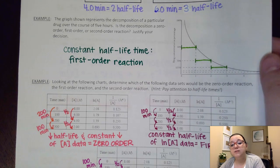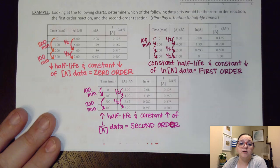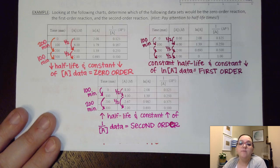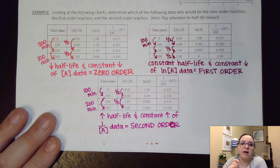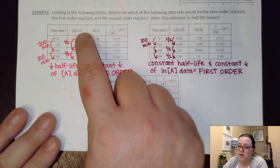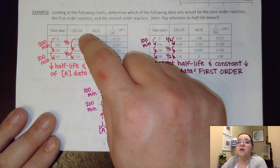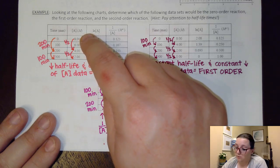All right. Now the next one, instead of giving us a graph, has given us some data. And it says, looking at the following charts, determine which of the following data sets would be the zero order reaction, the first order, and the second order. So if I can, the first thing I'm going to do is I'm going to look at my half-life times. There is another way to answer this question, and I'll address that here in a minute. But if I look at my concentration of A, I actually don't really care about the other two columns. If I look at my concentration of A, I want to ask myself, how long does it take to half that concentration each time? So like for example here, as I have 8 to begin with, if I'm trying to cut 8 in half, 8 would bump me down to 4. So to go from 8 to 4 took 200 minutes.